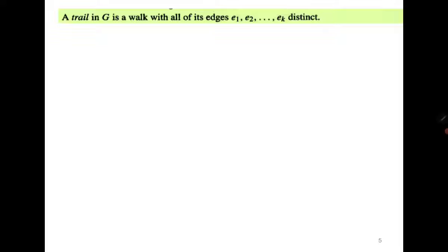For example, consider the path 1, 2, 3, 4. Going from 1 to 2, 2 to 3, 3 to 4, and 4 to 2. You can see that vertex 2 is repeated — not a problem — but there is no repetition of any edge. So this is a trail.